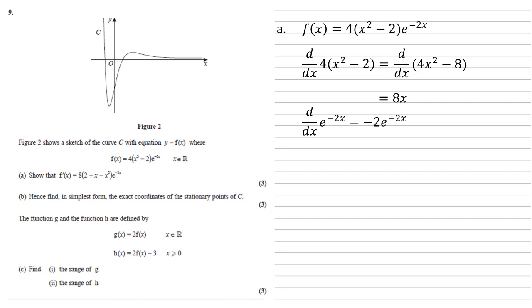Now using our product rule we get that f dash x equals the differentiation of the first part, 8x, times by e to the minus 2x. Add the differential of the second part, the minus 2 e to the minus 2x, times by the original first part. Simplifying this gives us 8x e to the minus 2x minus 8 lots of x squared minus 2 e to the minus 2x.